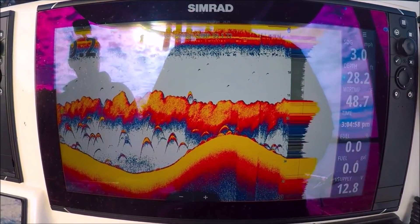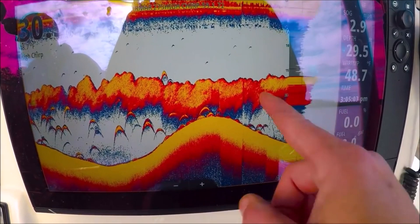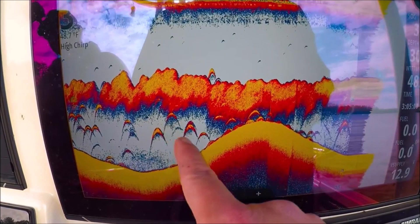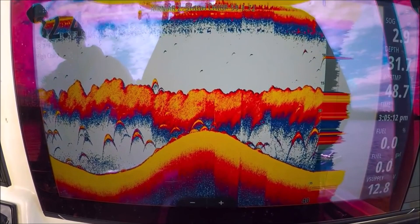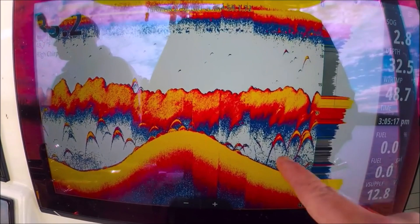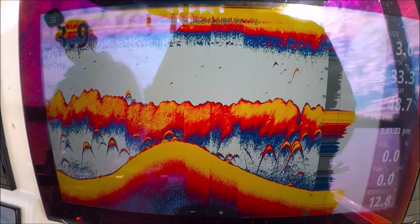Let's go back to high chirp. Alright, now what are we looking at on the screen here? This is thousands and thousands of threadfin shad underneath. These are striped bass, these are perch, these are catfish - anything down here eating these threadfins. You can clearly see the difference between the clouds of bait and the individual arches, the air bladders, these larger fish.